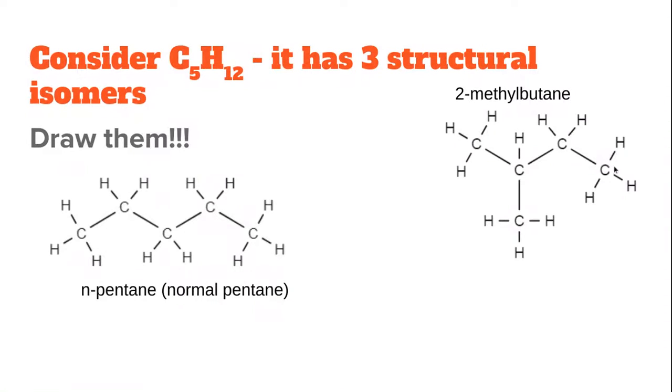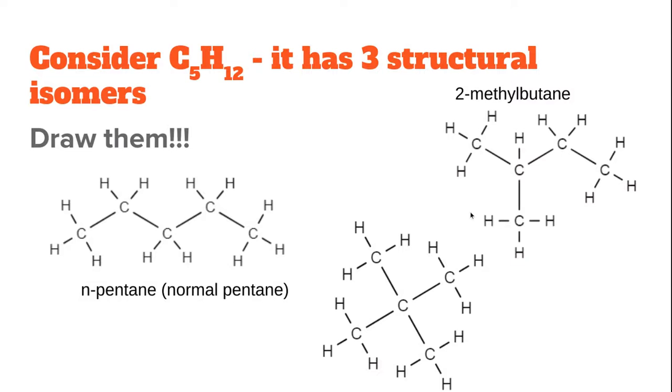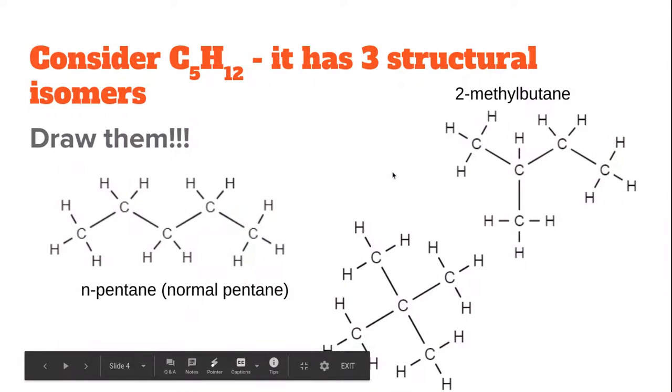The final one - I'm going to take this carbon here and attach it onto this second carbon there. So here is my final structural isomer. Notice the longest chain is actually three carbons long. So this is a propane, and there are two methyl groups off of carbon 2. So this is 2,2-dimethylpropane.